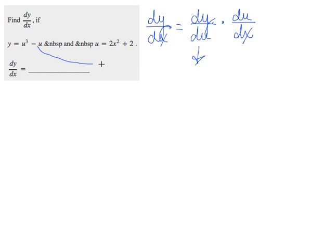So dy/du will differentiate y with respect to u right there. So that would be 3u squared, and the derivative of negative u is negative 1, times the derivative of u with respect to x, that's this one right there.